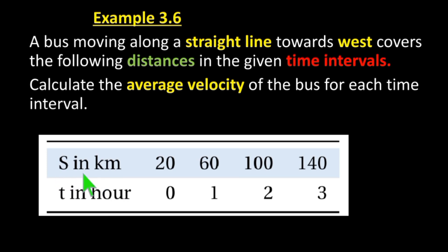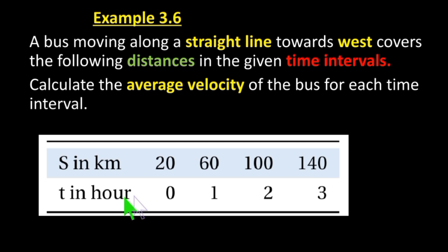The distances or displacements in kilometers are: 20 km, 60 km, 100 km, and 140 km.